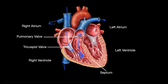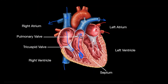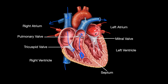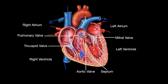Oxygen gets added and carbon dioxide waste gets removed. After this, the now oxygen-rich blood leaves the lungs, goes to the pulmonary veins, and re-enters the heart into the left atrium. From there blood passes through the mitral valve where it enters the left ventricle. From here blood gets pumped past the aortic valve and into the aorta, which as we discussed transports oxygenated blood to the rest of the body.